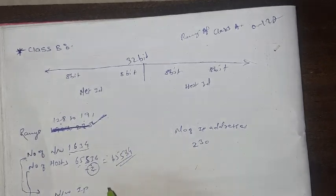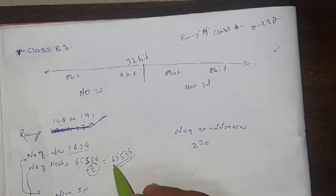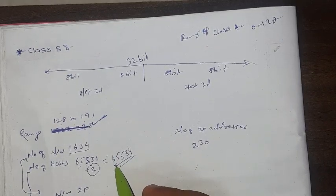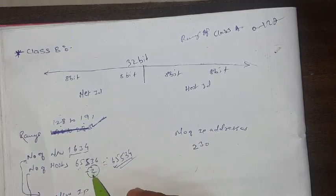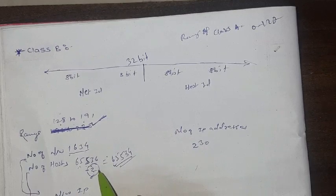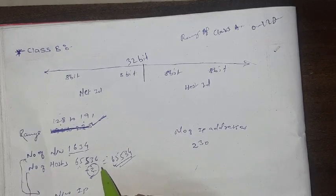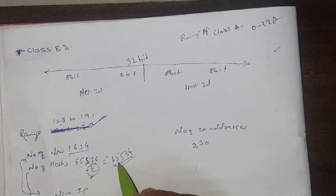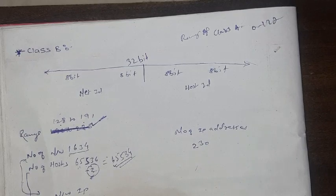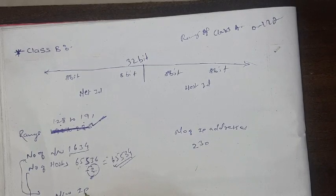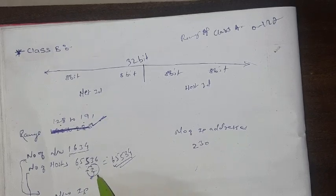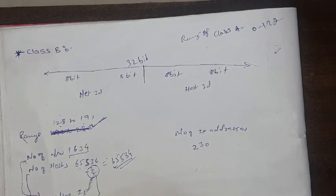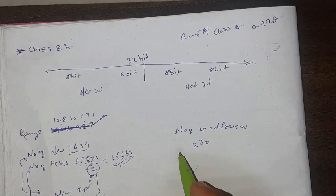Now here, why we are using only 65534 instead of 65536? These two IP addresses are not used by the host. Why? I will tell you later. Now here, network IP address, one of this from them, and the another one is what? Broadcast.